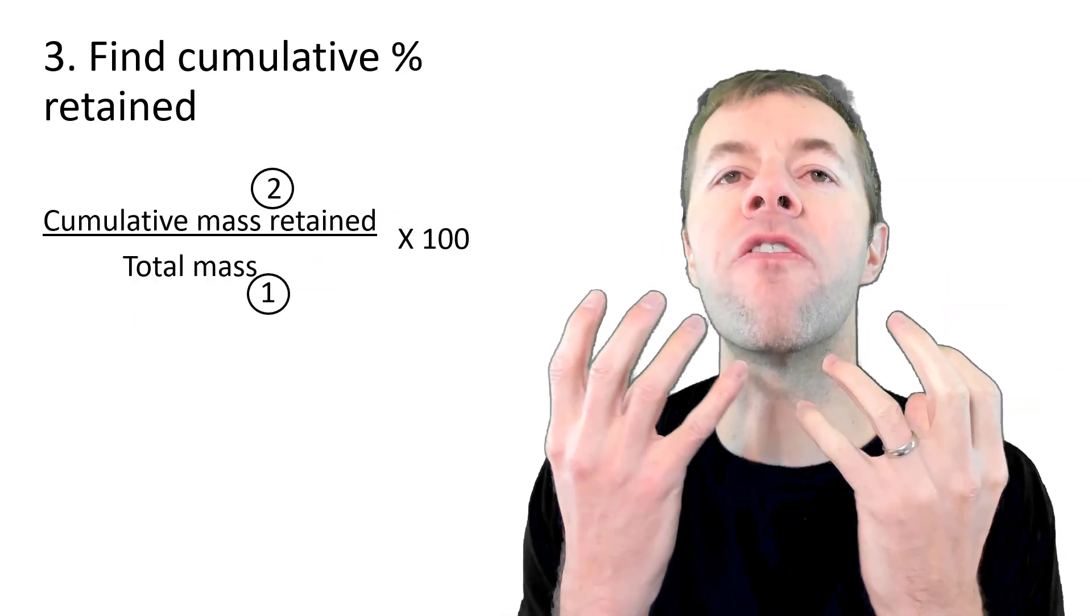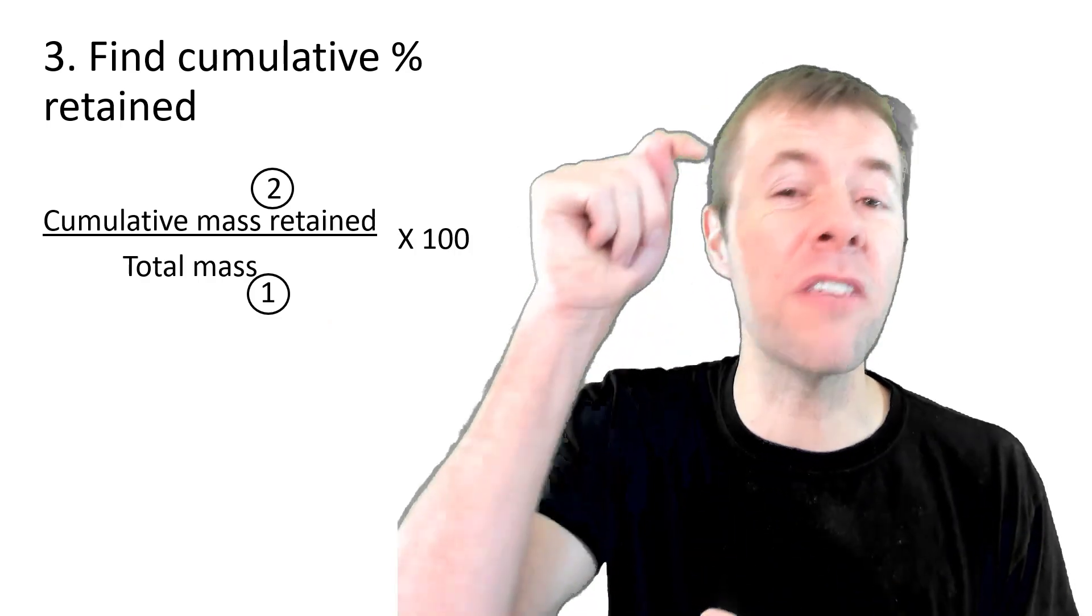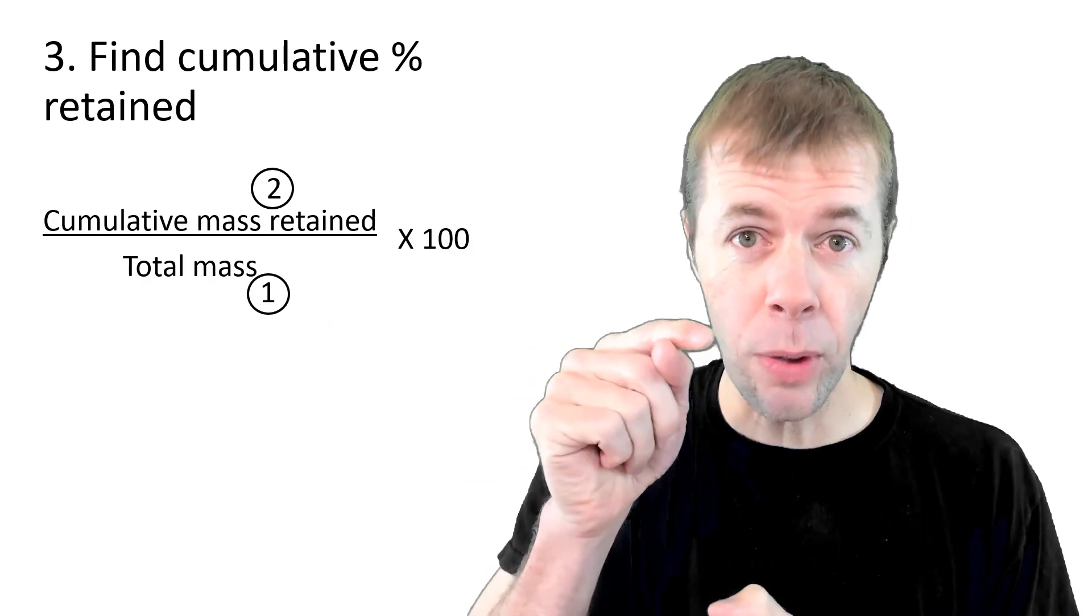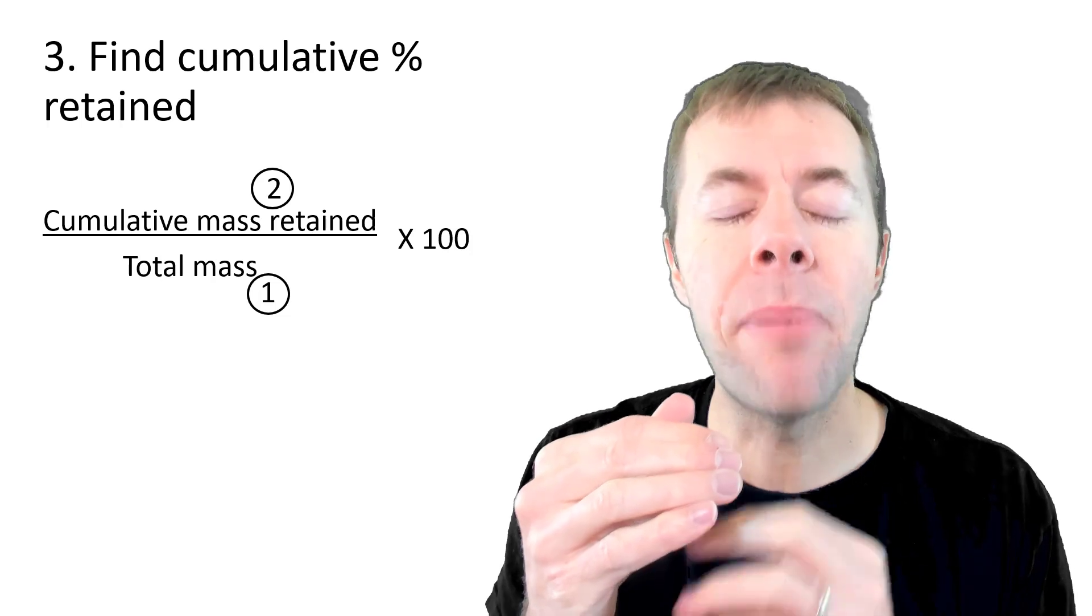Next we find our cumulative percent retained on each sieve. That's just the value that we previously calculated for each sieve divided by the total mass times 100. Let me show you what I'm talking about.